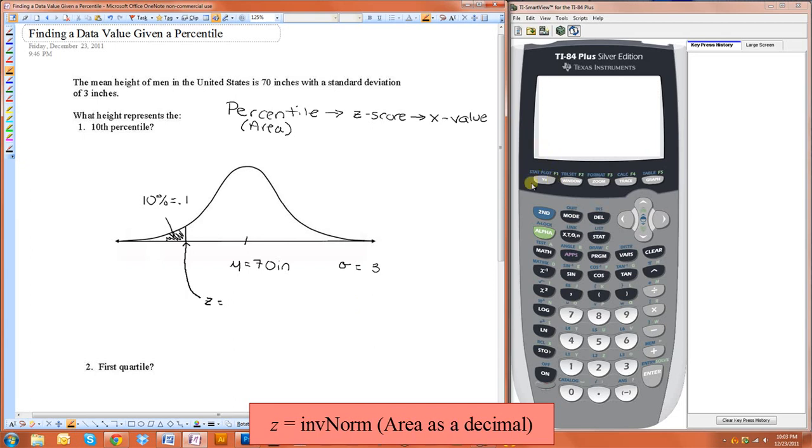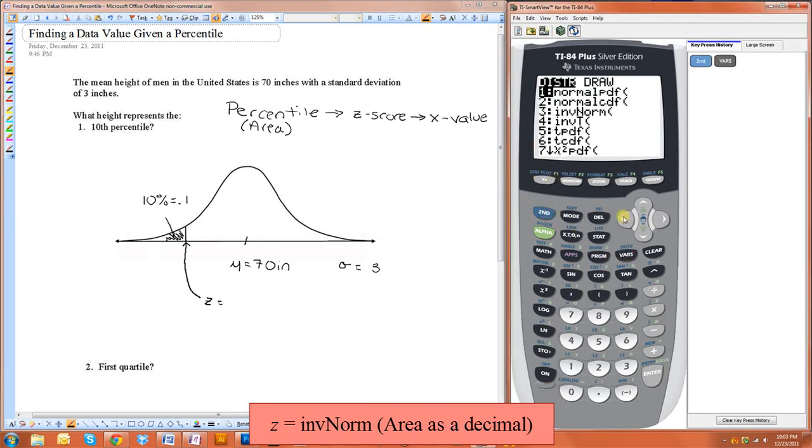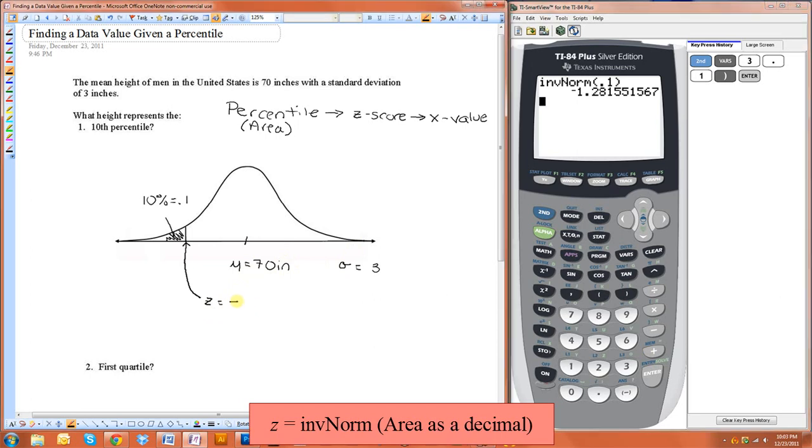The way we're going to do that is we're going to use the invNorm function on our calculator. You just put in 0.1, and the z-score is negative 1.282.